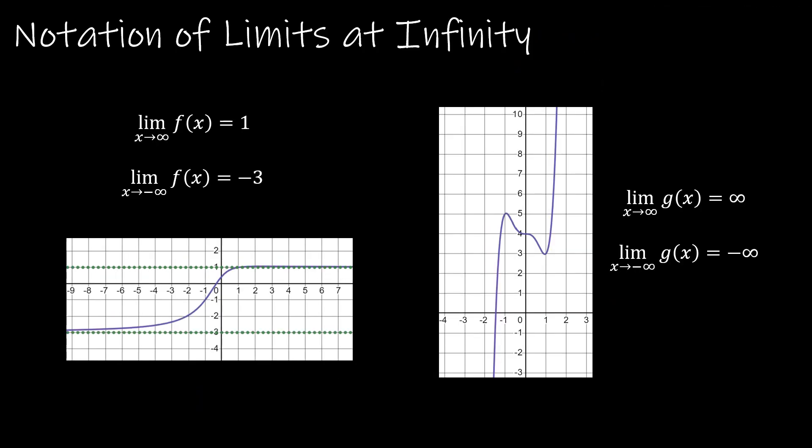This is just to highlight the notation. These are the same two examples. The limit as x approaches infinity of f(x) is equal to 1. The limit as x approaches negative infinity of f(x) is equal to negative 3. And then for our polynomial function, we've got positive infinity and negative infinity.